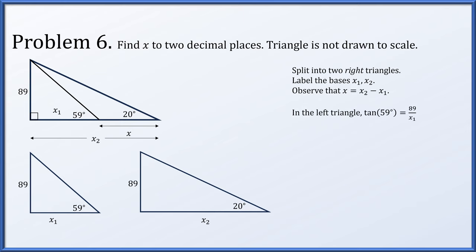Now in the left triangle, the tangent of 59 degrees, opposite over adjacent, is 89 over x1. Solving for x1, that's 89 over the tangent of 59 degrees. And in the right triangle, the tangent of 20 degrees, opposite over adjacent, is 89 over x2. So x2 is 89 over the tangent of 20 degrees.